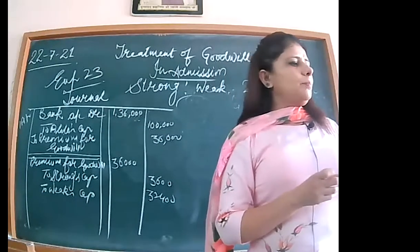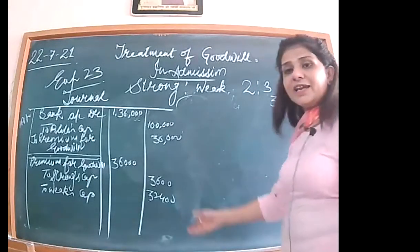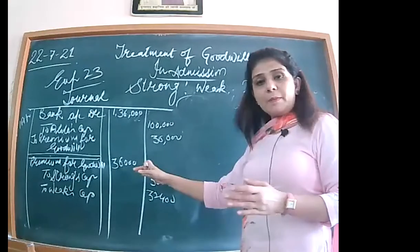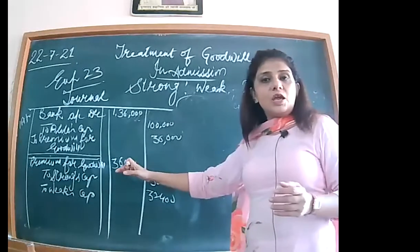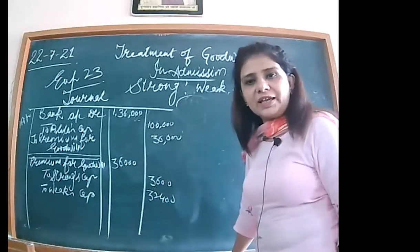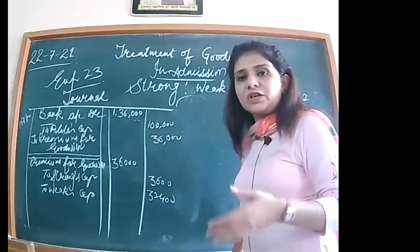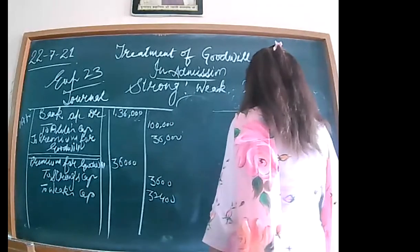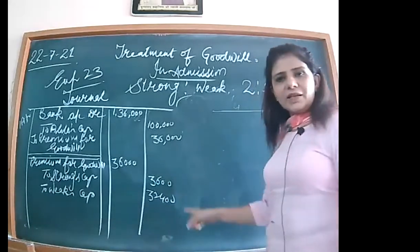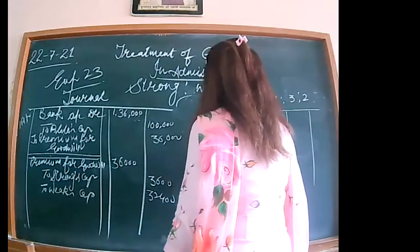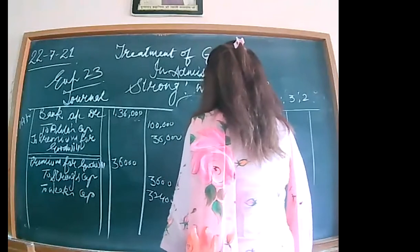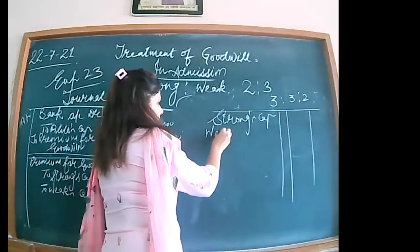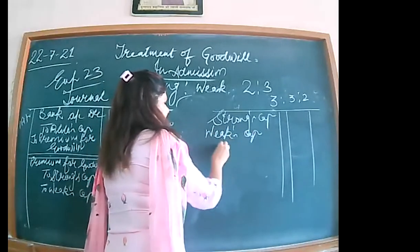When a partner withdraws something from the business, his capital is debited and bank or cash is credited — because cash goes out. So the third entry: whatever they were credited with, we now debit their capital. Strong's capital account debited, Weak's capital account debited, to bank or cash. This represents the withdrawal of the premium for goodwill from the business by the old partners.